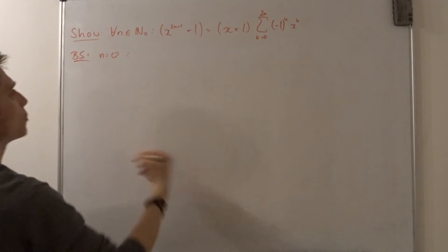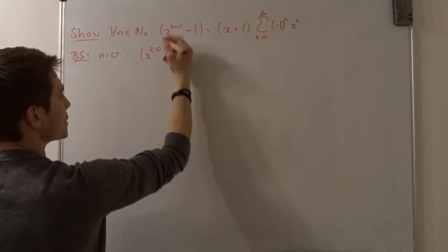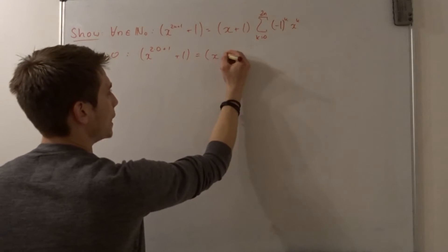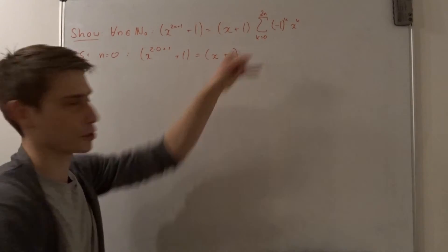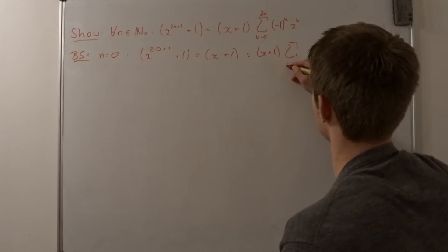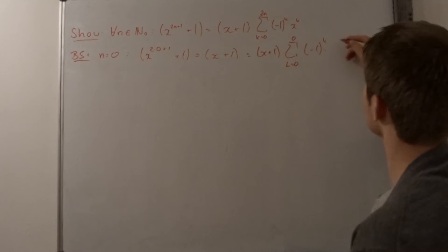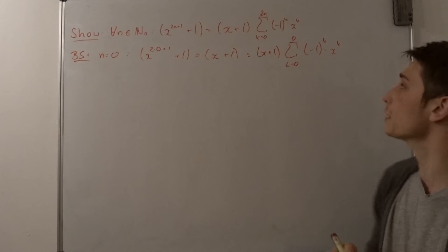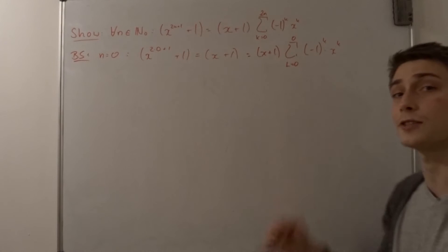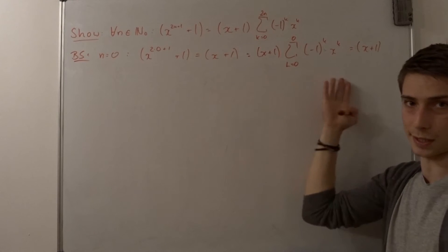So n equals to 0 — what would that mean? We can just plug this in. So that's x to the 2 times 0 plus 1 power plus 1, and all in all this is just x plus 1. And now we plug 0 into the right-hand side: that's x plus 1 times the sum from k equals 0 to 0 of minus 1 to the k-th power times x to the k-th power. This index goes from 0 to 0, so it's just minus 1 to the 0 power times x to the 0 power, which is just 1. So all in all it's just x plus 1, and you can see this is definitely true.